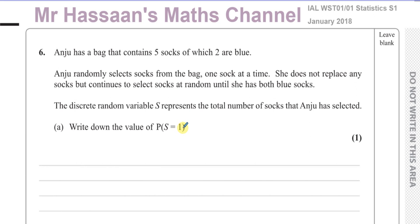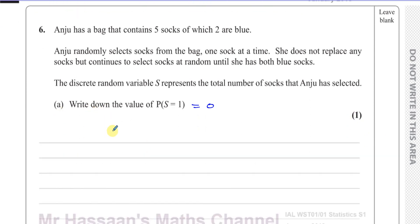If she carries on picking until she's got two blue socks, the lowest value S can be is two — blue and then blue again. So S equals one is not a possibility, meaning there's a zero probability of S equals one. The minimum value for S has to be two. That's why this part is only worth one mark and says 'write down' — no calculation involved.